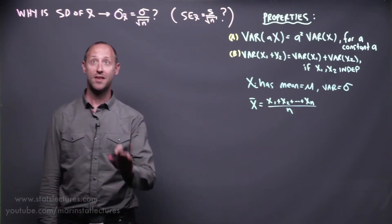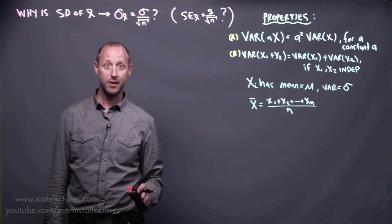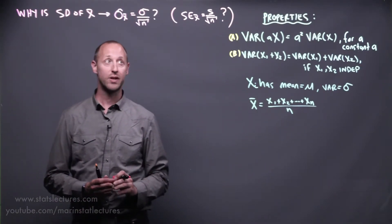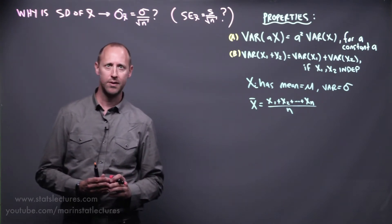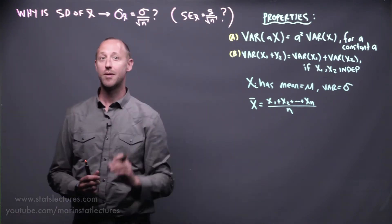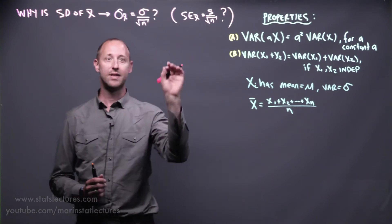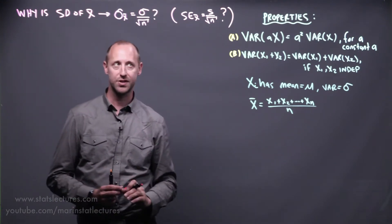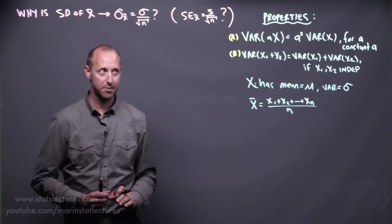We're going to talk about why the standard deviation of the sample mean, or when dealing with samples what gets called the standard error of the sample mean, happens to be sigma over square root of n, or the standard deviation of the individuals divided by the square root of the sample size.